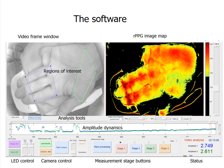Here is a screenshot of the rPPG imaging software, designed in MATLAB environment. The graphical user interface consists of several parts: a current video frame window, an rPPG image map, and a signal window displaying mean averaged rPPG amplitudes from manually selected regions of interest. There is also LED control, video camera control, measurement stage buttons with the ability to set time markers in the rPPG signal, a window with current time and microcirculation amplitudes, as well as post-processing analysis tools.